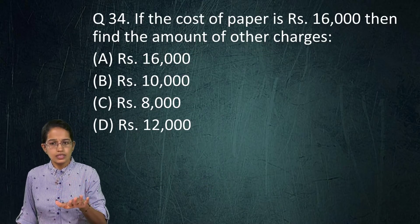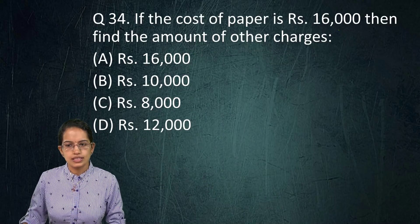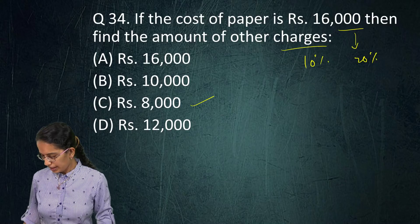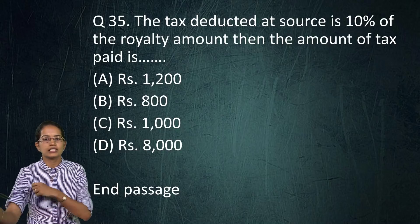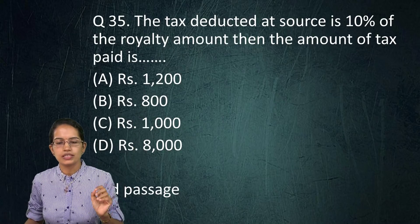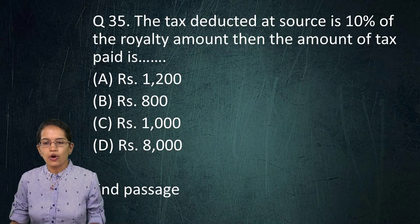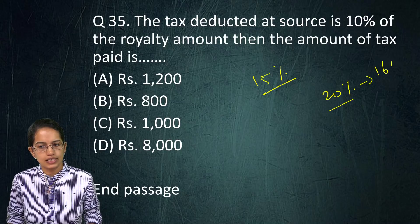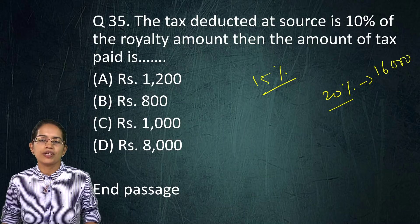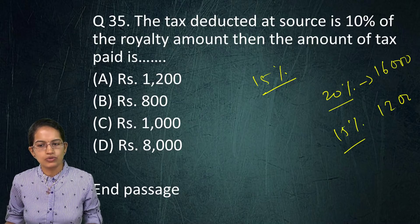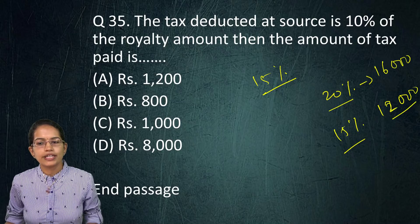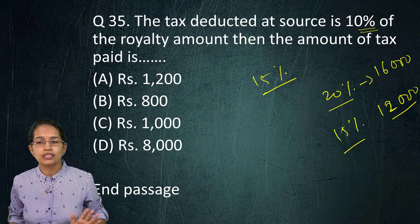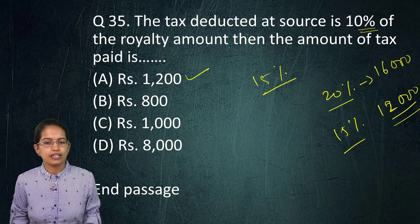The next sub-question: tax deducted at source is 10% of the royalty amount. Royalty is 15%; since 20% (cost of paper) = 16,000, then 15% (royalty) = 12,000. TDS = 10% of 12,000 = 1,200. So option A is the right answer.